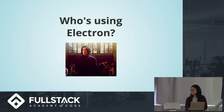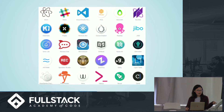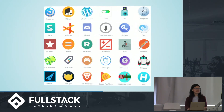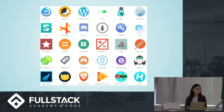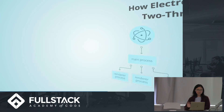So who's using Electron? All the cool kids. Slack, Atom, Visual Studio Code if you use that, Yhat Rodeo — which I think is one of our employers for hiring day — WordPress, Postman, and they keep adding new stuff every week. You can check on their website to see who's using Electron.